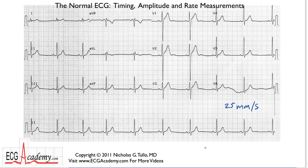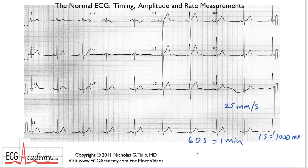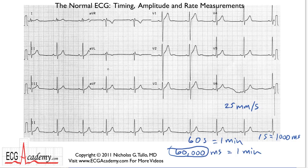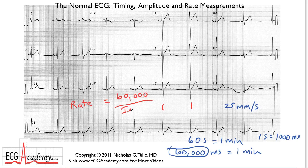We're going to get into mathematics. The conversion has to do with the fact that there are 60 seconds in one minute, and because we're dealing in beats per minute, we have to put this into the equation. One second is equal to a thousand milliseconds, so 60 seconds equals 60,000 milliseconds in a minute. That's the fudge factor — 60,000. The rate relationship is: rate equals 60,000 divided by the interval between beats.